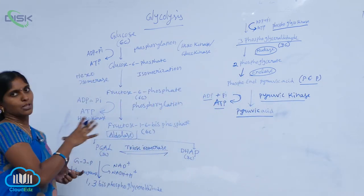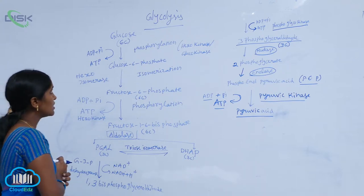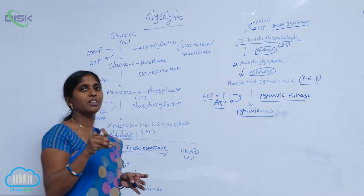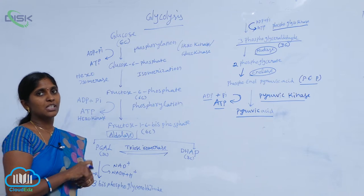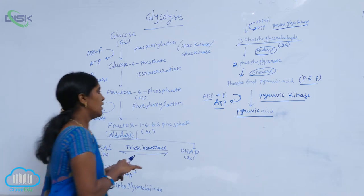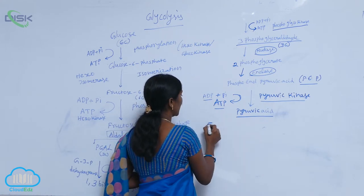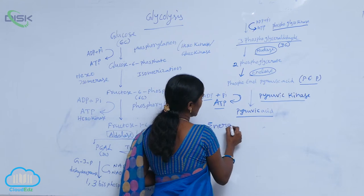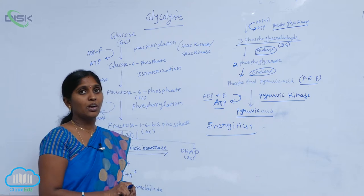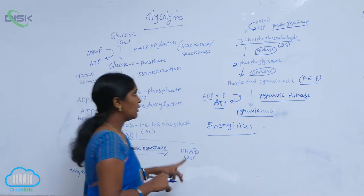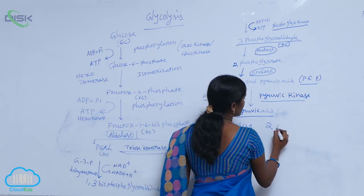In total, 10 steps are involved in glycolysis. During glycolysis, glucose is converted into 2 pyruvic acid molecules. Regarding the energetics — how much energy is required to carry out all the reactions included in glycolysis — 2 ATPs are required.